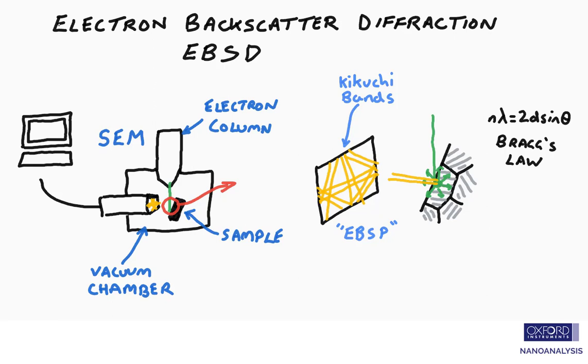Now if we know enough about the samples, such as the possible phases, the computer can index those diffraction patterns, and confirm the phase, and give us the crystallographic orientation.